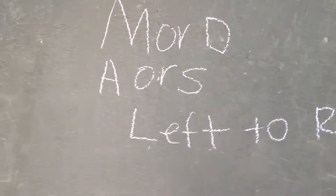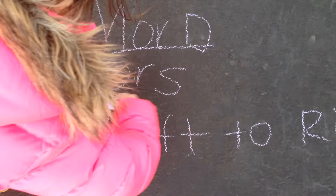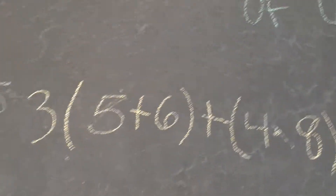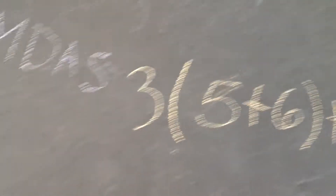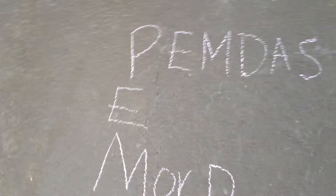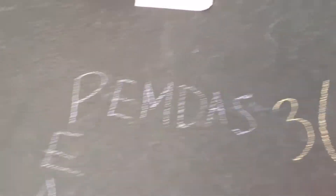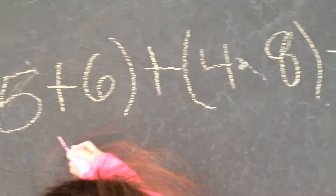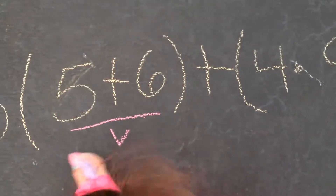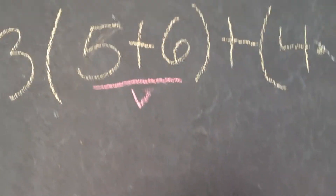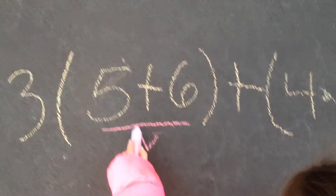You can use this as a checklist as you do your problem. We're going to go in and start. On our checklist, the first thing we have is P, and that stands for parentheses. We're going to look for our parentheses. Since we're going left to right, the first one we have is 5 plus 6. We're going to underline it once since that is our first step.